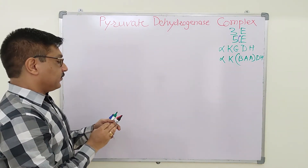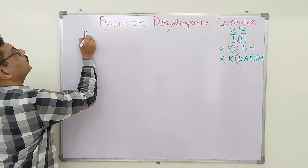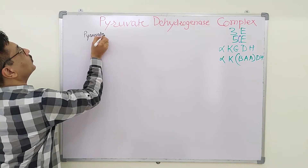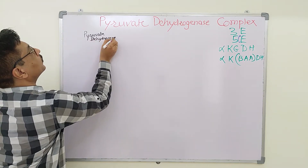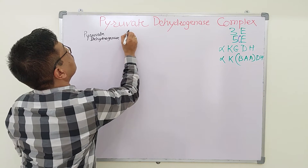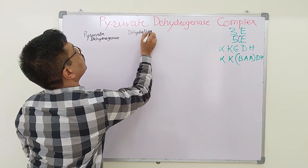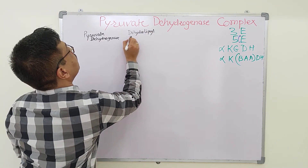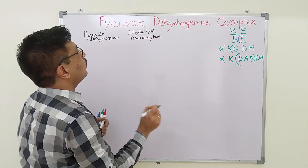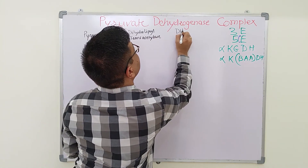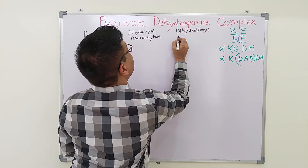The three enzymes required for this complex are: first, pyruvate dehydrogenase; second, dihydrolipoyl transacetylase; and third, dihydrolipoyl dehydrogenase.